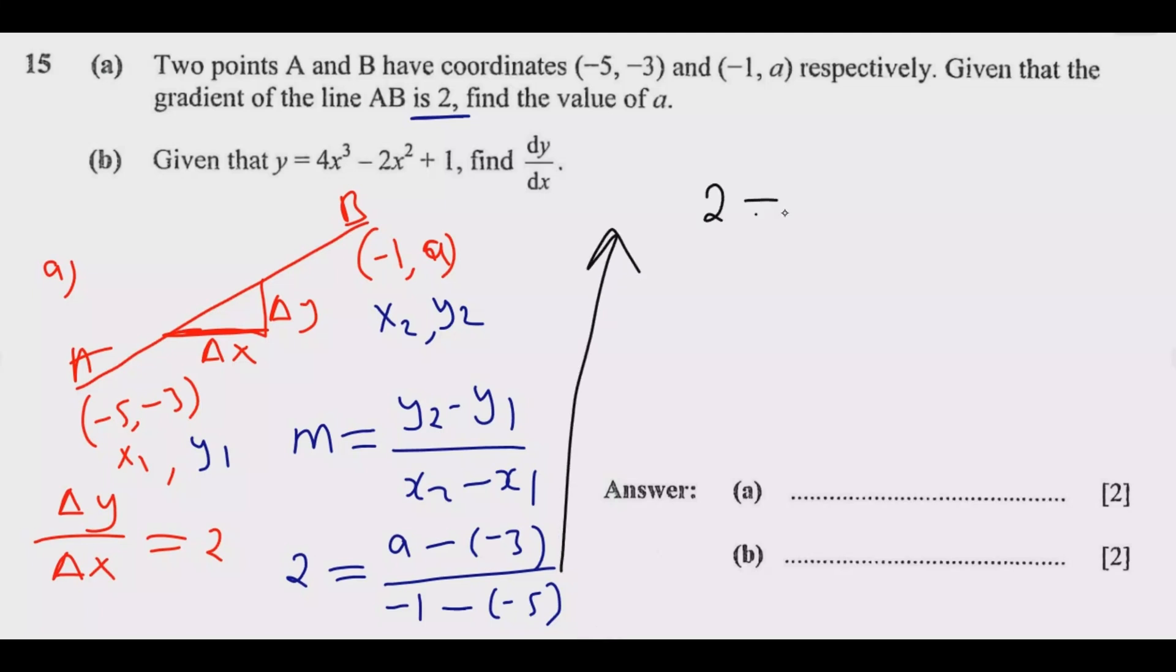So I'm going to have 2 = (a + 3)/4. You have to be careful when dealing with negatives. Because of this negative and this negative, they multiply to give us a positive. So negative minus negative 3 is a plus 3, and negative 1 minus negative 5 gives us positive 4.